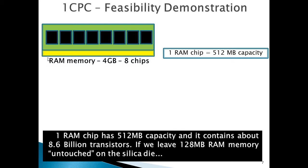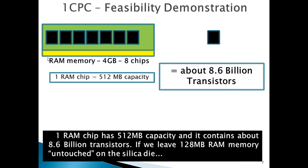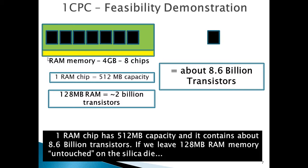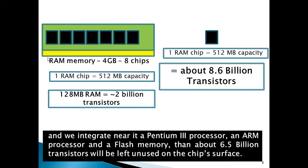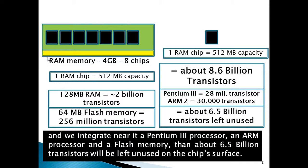One CPC Feasibility Demonstration. We come back to the RAM memory module with 4 GB capacity and 8 chips. One RAM memory chip equals 512 MB capacity and contains about 8.6 billion transistors, as shown before. If we leave 128 MB RAM memory untouched on the silica die, that 128 MB means about 2.2 billion transistors. We can integrate near the RAM memory a Pentium 3 processor, an ARM processor, and a flash memory. Even then, about 6.5 billion transistors will be left unused on the chip surface.